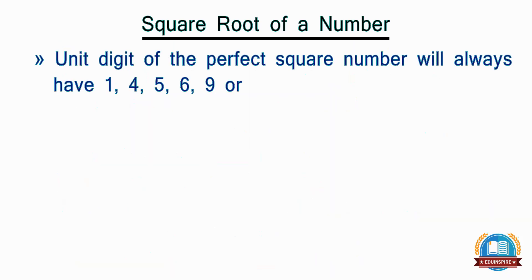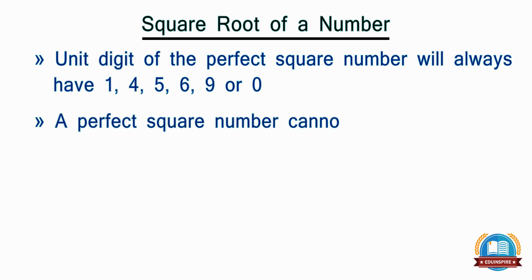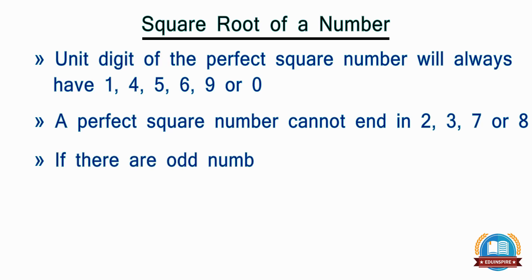The unit digit of a perfect square number will always be 1, 4, 5, 6, 9, or 0. A perfect square number cannot end in 2, 3, 7, or 8.